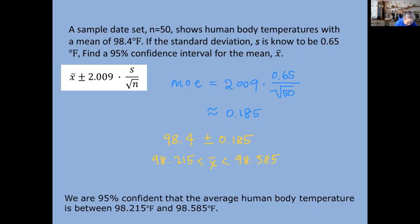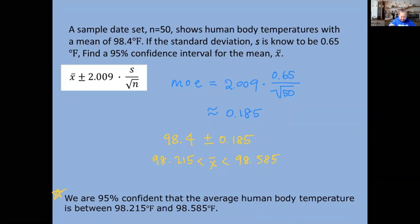With this interval, the conclusion will be: we are 95% confident that the average human body temperature is between 98.215 Fahrenheit and 98.585 Fahrenheit. And amazingly, this is it. We're all done. We went through all the units and sections, and this was the last one. Let's celebrate. Just pat your own head, you did a really good job throughout the whole year.